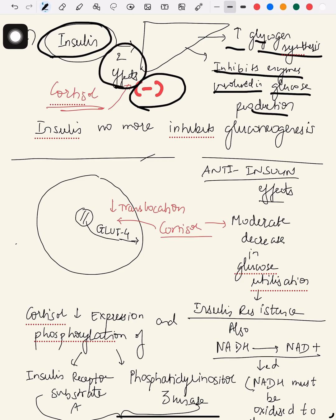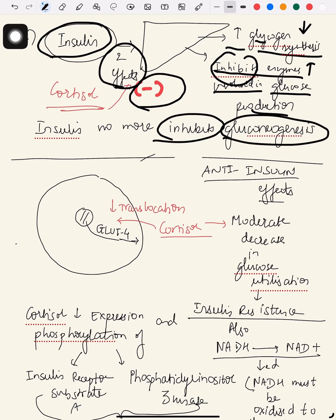What cortisol does is antagonize these two effects. That means glycogen synthesis, which was increased by insulin, will now decrease. The enzymes which were inhibited by insulin will no longer be inhibited and will be activated. So insulin no longer inhibits gluconeogenesis.